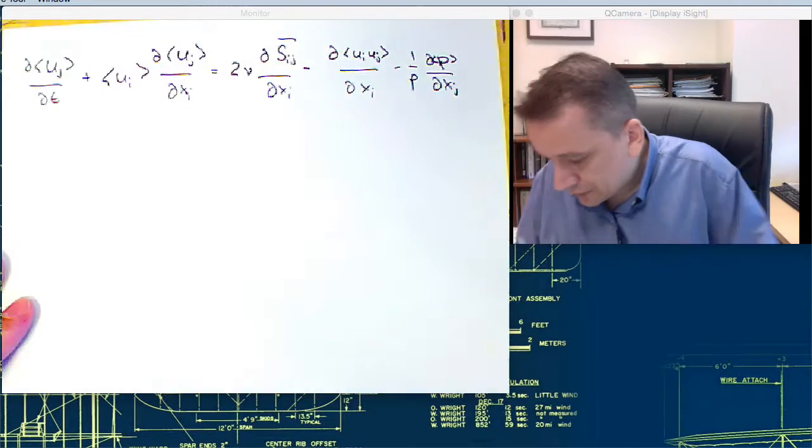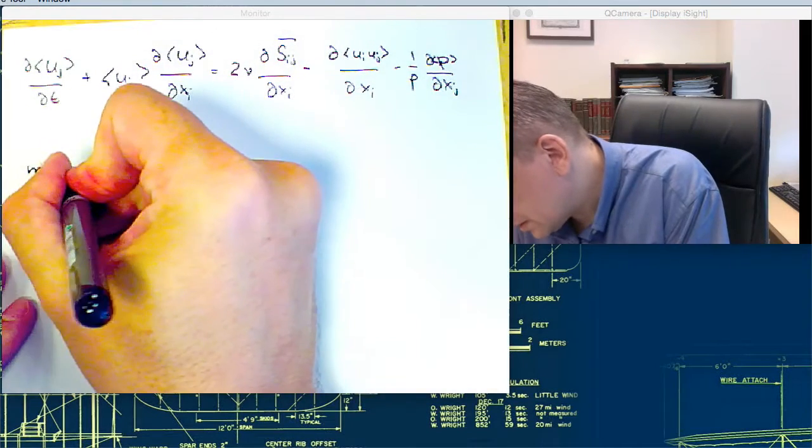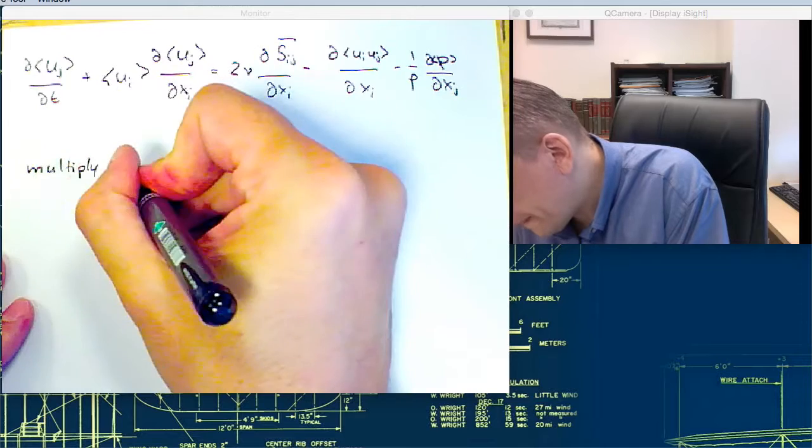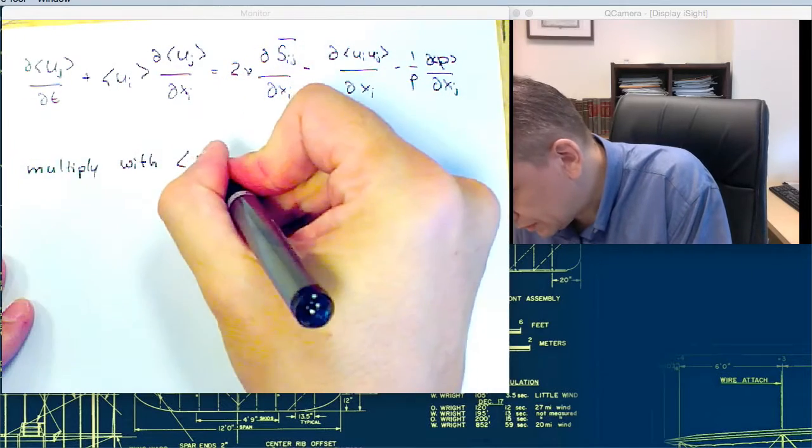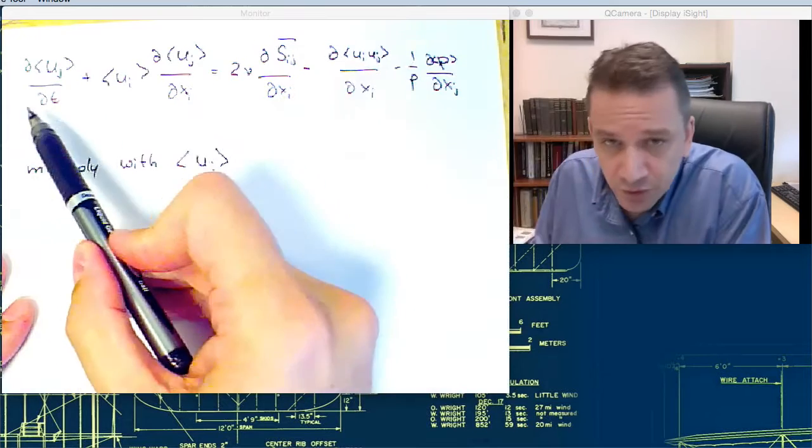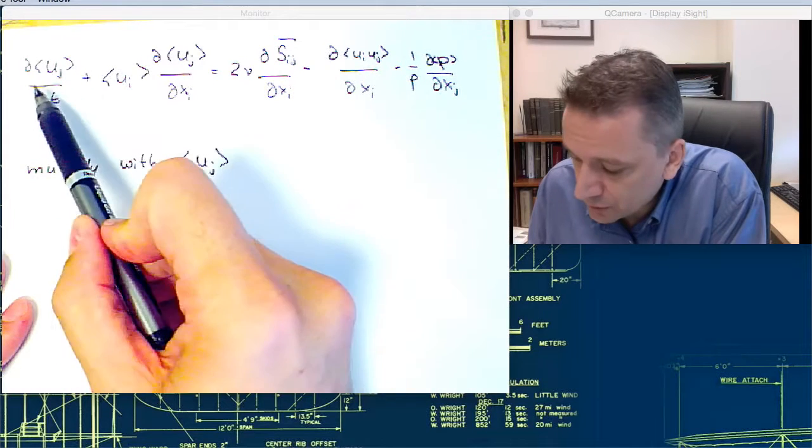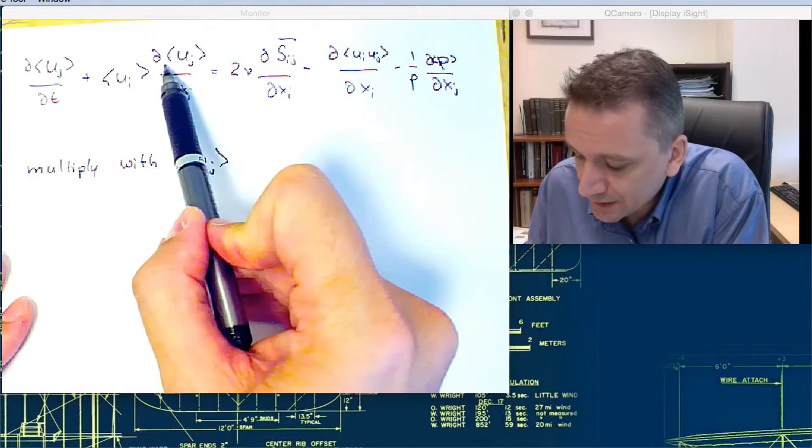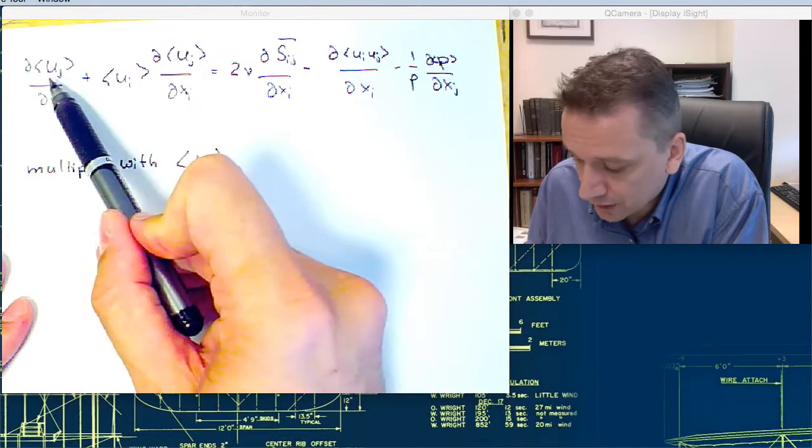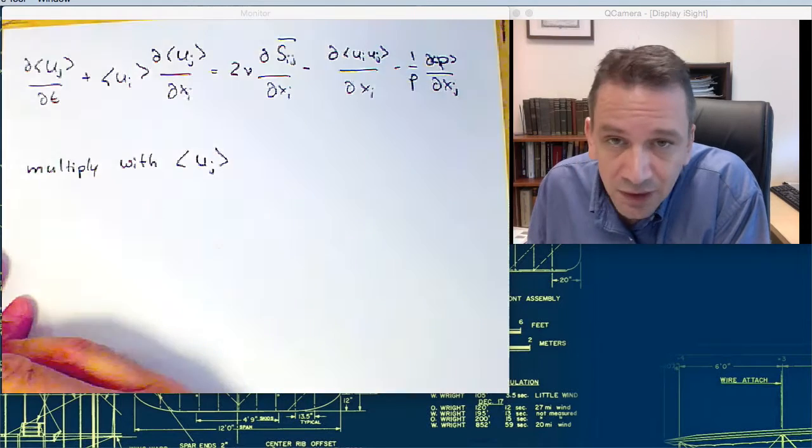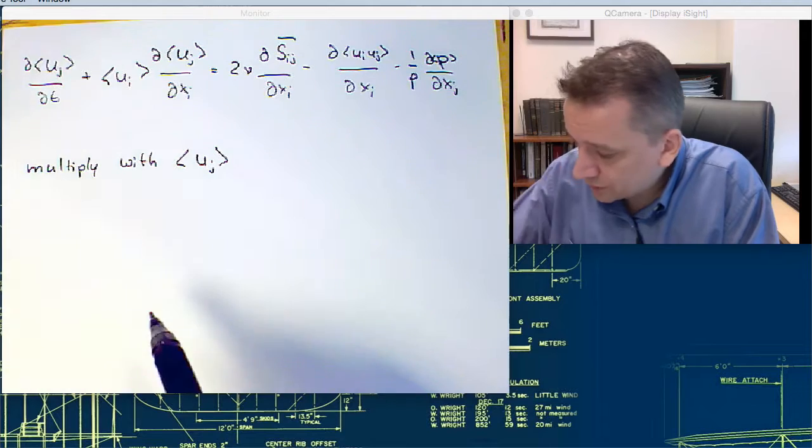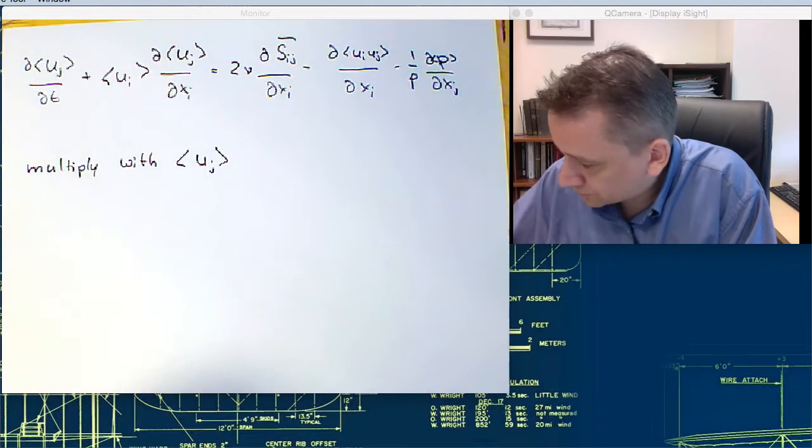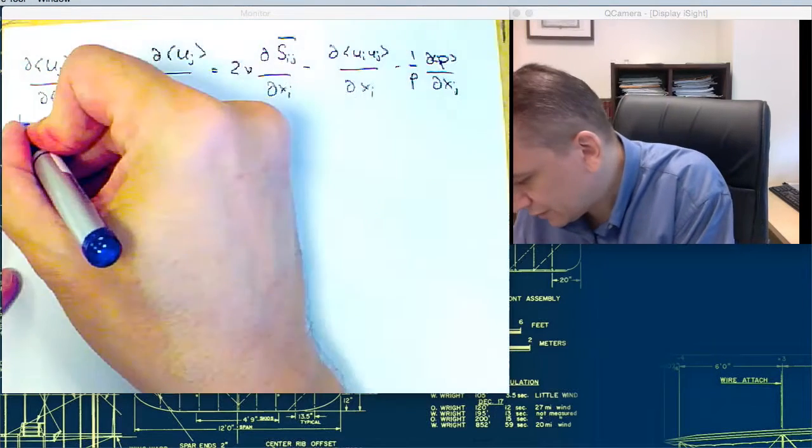So we need to multiply that with uj. If you multiply that with uj, the hope is if we pull it somewhere inside here, then we get expressions for uj uj with the mean energy of our flow. So I'm going to do that now term by term, because otherwise it's going to be quite complicated.